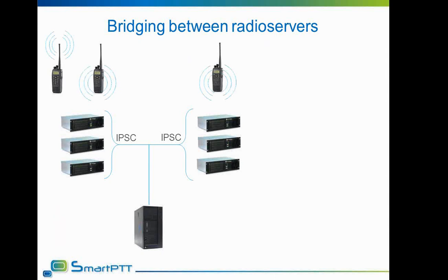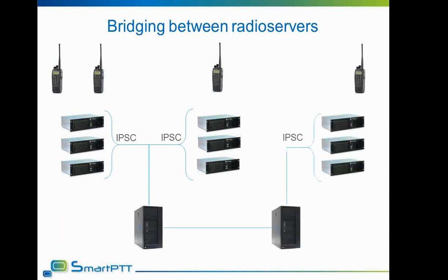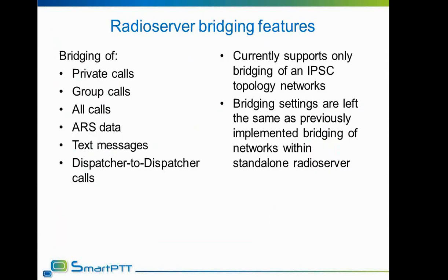Radio server bridging allows connecting another independent radio server to an existing system and extending it. When a bridged group is called, all stations system-wide belonging to that group will respond. Currently, radio server bridging supports bridging of all calls — private calls, group calls, registration data, text messages, and dispatcher calls, including dispatcher-to-dispatcher connections. Bridging settings in dispatcher software are transparent; there is no problem connecting another SmartPTT radio server to the network if both radio servers are correctly configured.